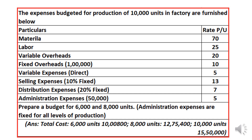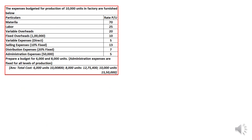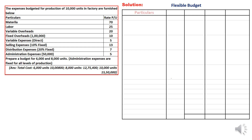The information is provided at 10,000 units and we are asked to prepare the budget for 6,000 and 8,000 units of production. Coming to the solution, I have prepared the flexible budget statement with columns for particulars, 6,000 units, 8,000 units, and 10,000 units. We divide the expenditure into variable, semi-variable, and fixed overhead categories.